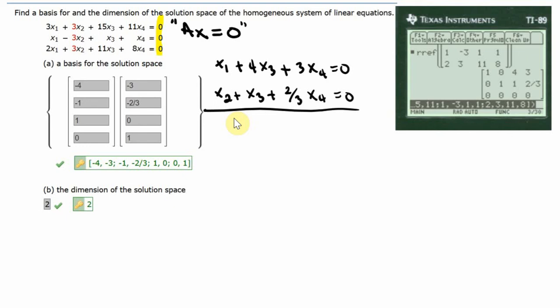Notice both equations depend on X₃ and X₄. We can write X₁ in terms of X₃ and X₄, and X₂ in terms of X₃ and X₄. Thus, the dimension would be 2 because the system is dependent on two independent parameters that we can call S and T. Let X₃ equal S and X₄ equal T.